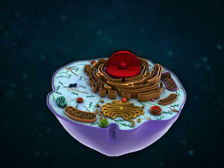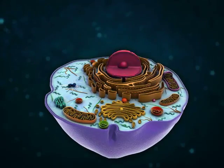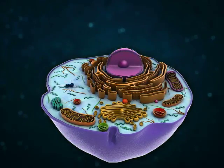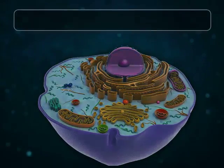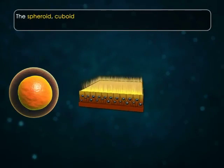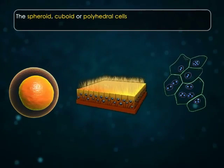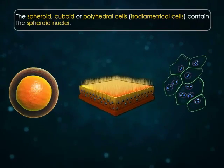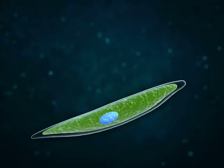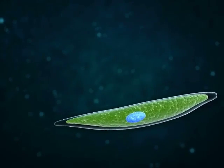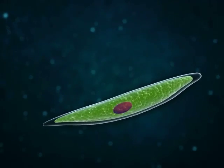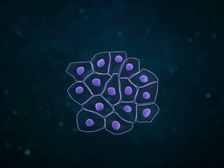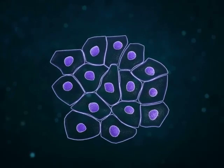The shape of the nucleus normally remains related to the shape of the cell, but certain nuclei are almost irregular in shape. Spheroid, cuboid, or polyhedral isodiametrical cells contain spheroid nuclei. The nuclei of cylindrical, prismatic, or fusiform cells are ellipsoid in shape. Cells of the squamous epithelium contain discoidal nuclei.